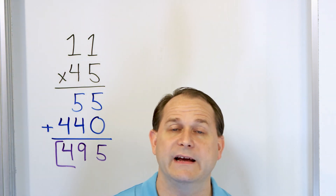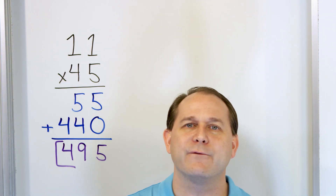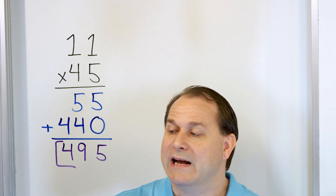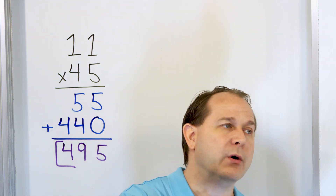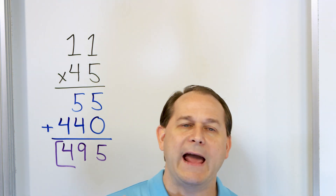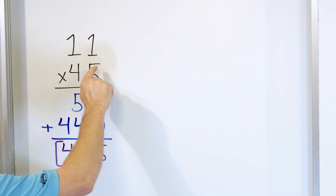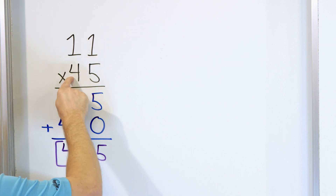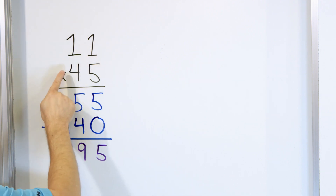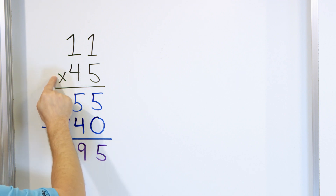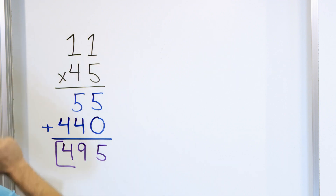This process is going to be the same for every 2-digit times 2-digit problem that we do. Later on, we'll be doing multiplying times 3 digits and multiplying times 4 digits, and it'll be very similar. Basically, you'll multiply this digit times everything, and then you multiply this digit times everything. If we had another digit out in front, we would have a third line multiplying that digit times everything, and we would add everything together.